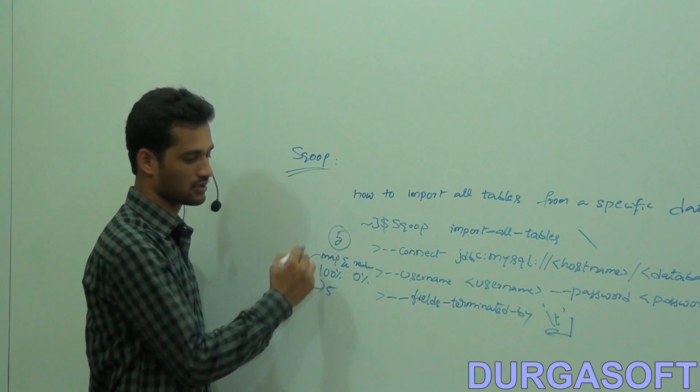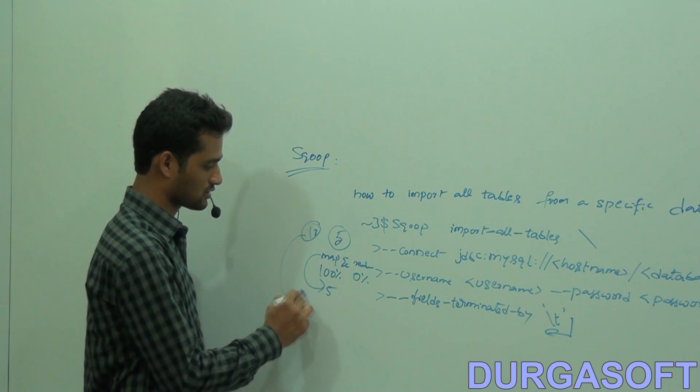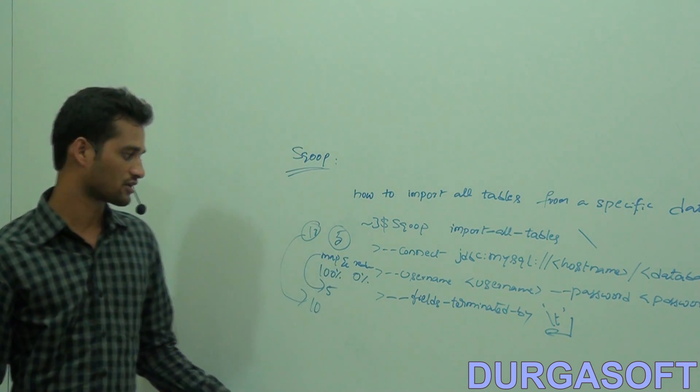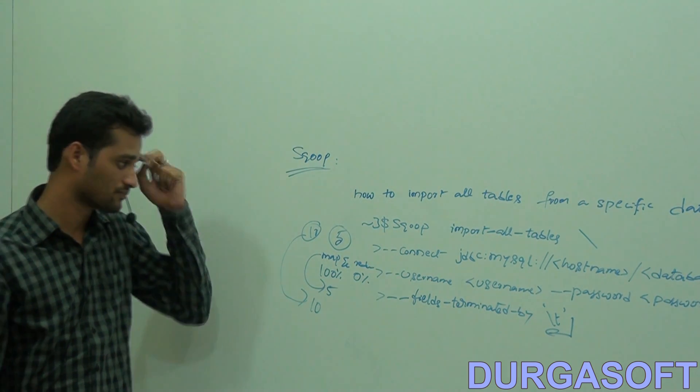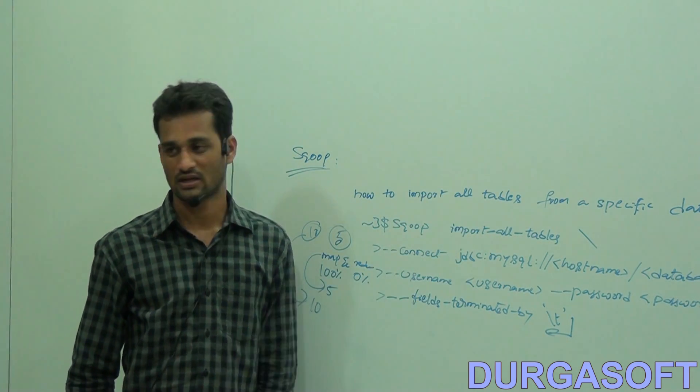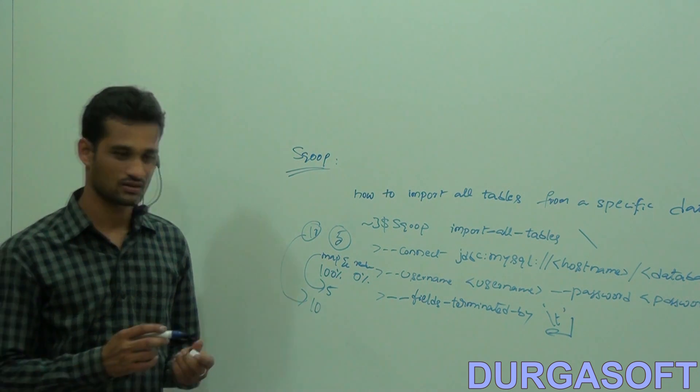Five times if you have five tables; if you have ten tables, it will be completed ten times. It runs with MapReduce for each table. So this is how you import all your tables from your specific database.